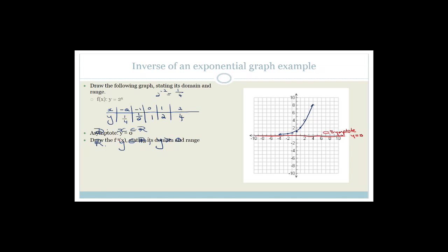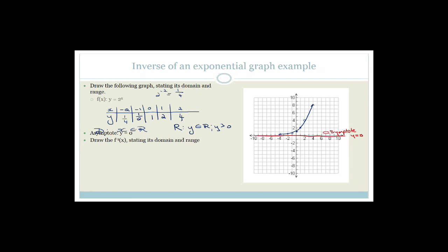Now it says draw f inverse of x, state the domain and range. We're swapping the x and y and solving for y. We had x equals 2 to the y, and we need to solve for y. Using the rule: 2 to the 3 equals 8, therefore log 8 base 2 equals 3. So rearranging 2 to the y equals x gives us log x base 2 equals y. That's the equation we're going for — log x base 2 equals y.